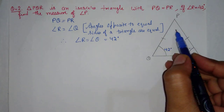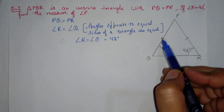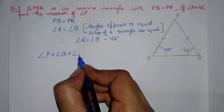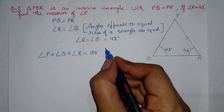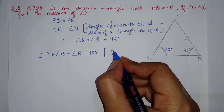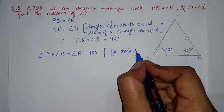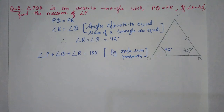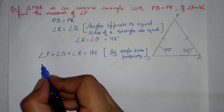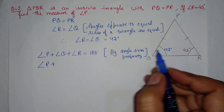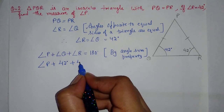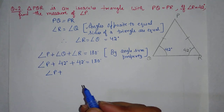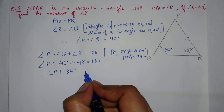By angle sum property, the sum of 3 angles in a triangle is 180 degrees. So: angle P plus angle Q plus angle R is equal to 180 degrees (by angle sum property). Angle P is unknown; in place of angle Q we write 42 degrees, and in place of angle R we also write 42 degrees. So angle P plus 84 degrees equals 180 degrees.